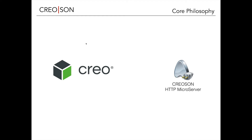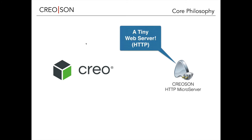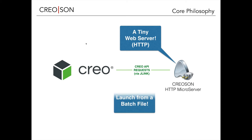The core philosophy of how we do this is this: you have your Creo installation, and then you have this Creoson HTTP microserver. HTTP is the same thing that webpages use to request things, so it's a web server. Once this starts, it connects to Creo and basically allows you to go back and forth with the Creo API requests using J-Link. You can launch that server from a simple batch file after it's configured and localized to the machine where Creo is.